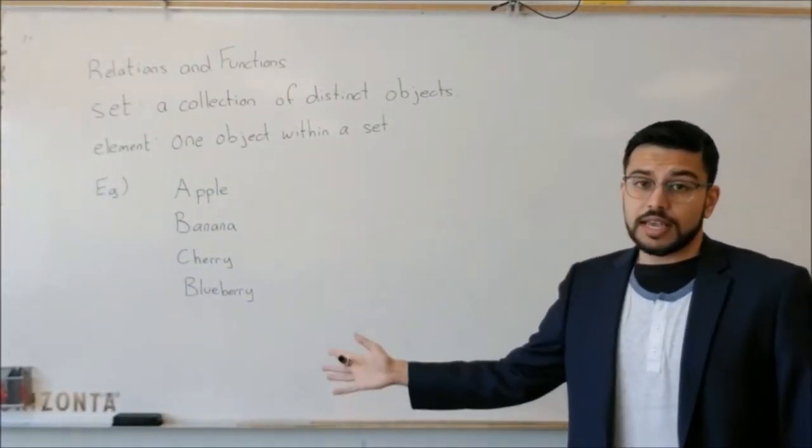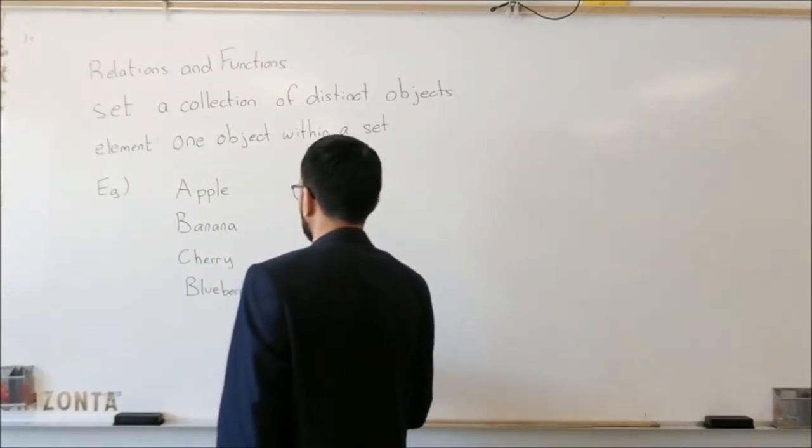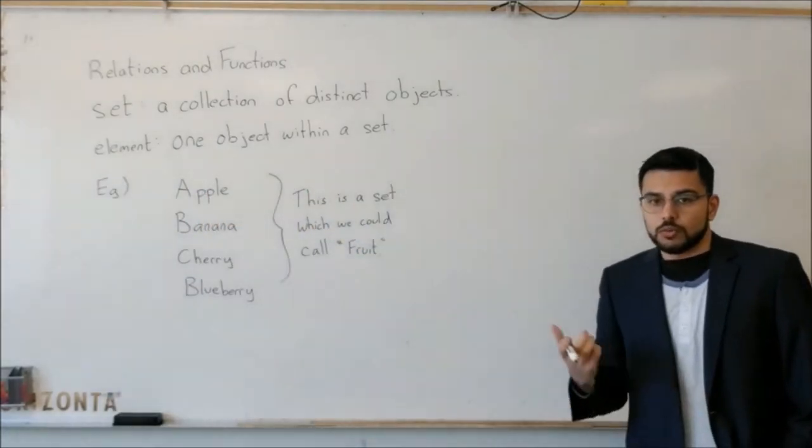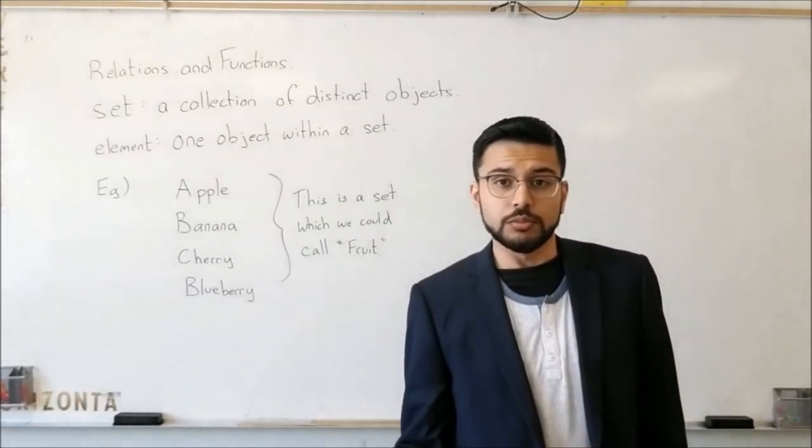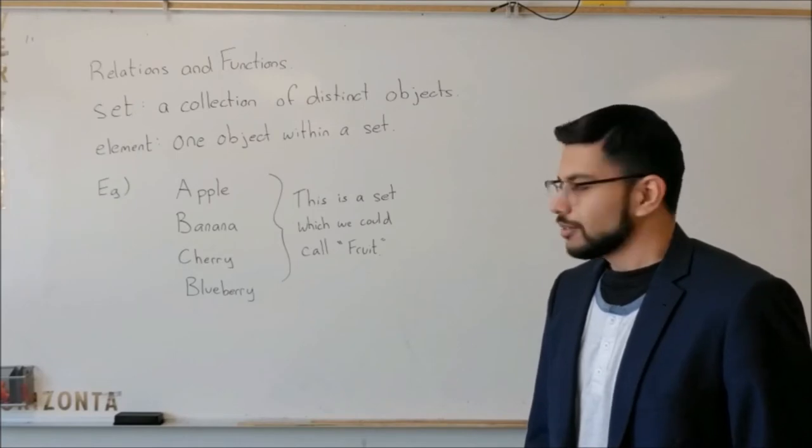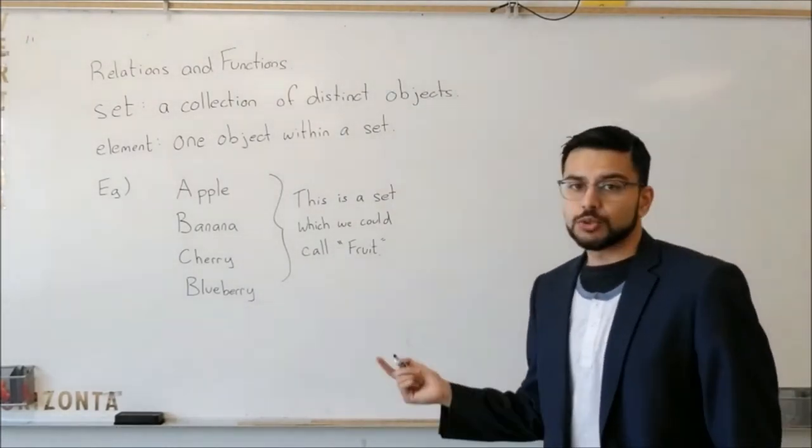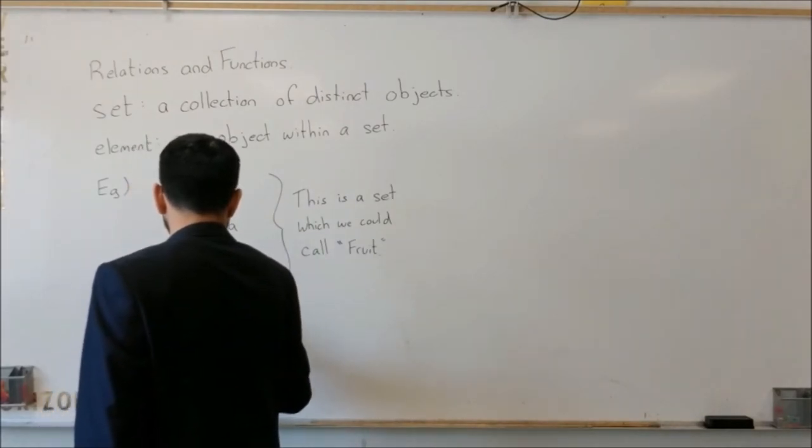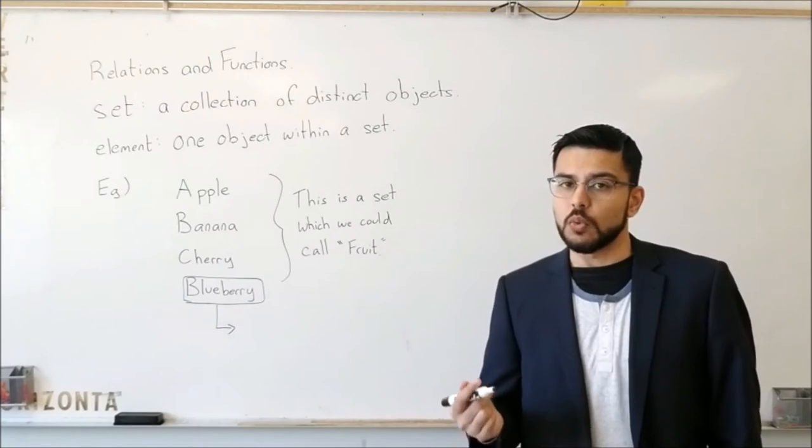Yeah, so this is an example of a set. And we could call this set Fruits. So we have a bunch of distinct objects, these guys over here. And we can call this set fruit. You can call it food. I don't know what else could you call it? But that is our set. Now each individual fruit in this set, for example, just the blueberry, that would be an example of an element. It is one part of the set.